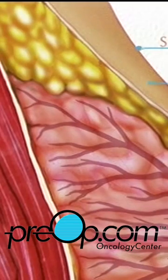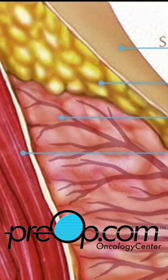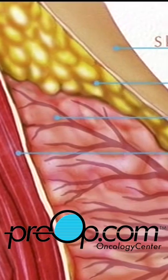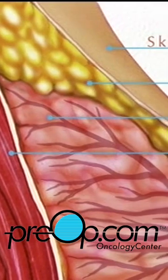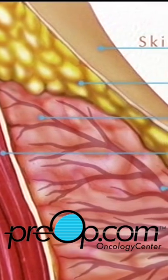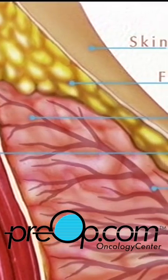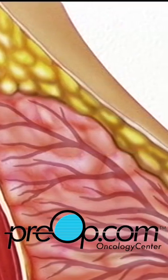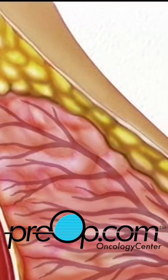The breast is made of layers of skin, fat, and breast tissue, all of which overlay the pectoralis muscle. Breast tissue itself is made up of a network of tiny milk-carrying ducts, and there are three ways in which a lump can form among them.